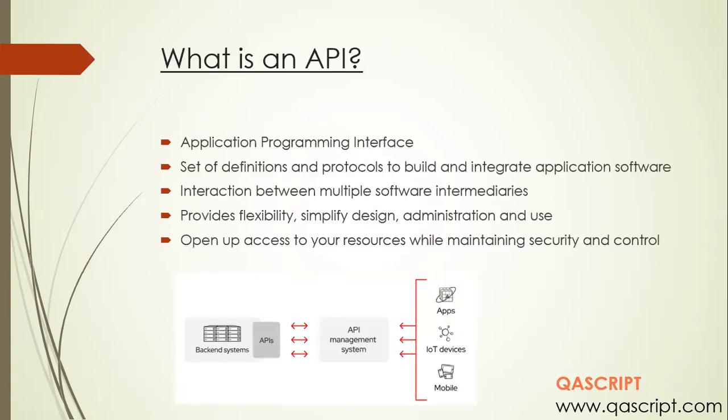So what is an API? It stands for Application Programming Interface. In layman terms, API is something which helps two systems to interact with each other. You can call it a set of definitions or protocols through which you can build and integrate different application softwares. It provides you a way of interaction between your different software intermediaries.